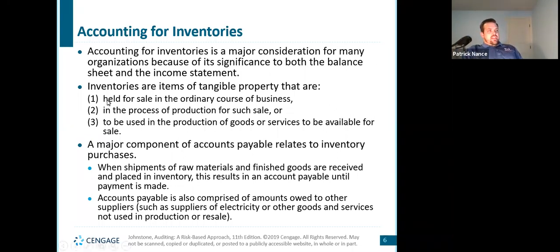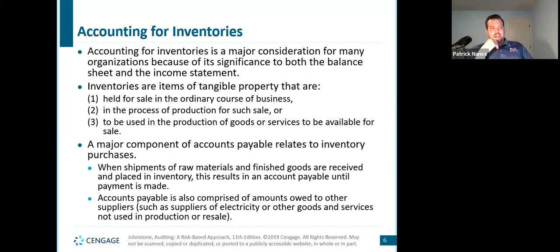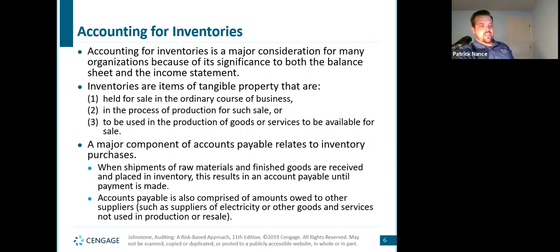To take this back to cost accounting or managerial accounting: number one would be our finished goods; number two would be our work in process; and number three would be our raw materials, generally speaking. A major component of accounts payable relates to inventory purchases when shipments of raw materials and finished goods are received and placed in inventory — this results in an accounts payable until payment is made. Accounts payable is also comprised of amounts owed to other suppliers like electricity and other goods and services, not just inventory. But purchasing is usually a major part of our accounts payable balance.